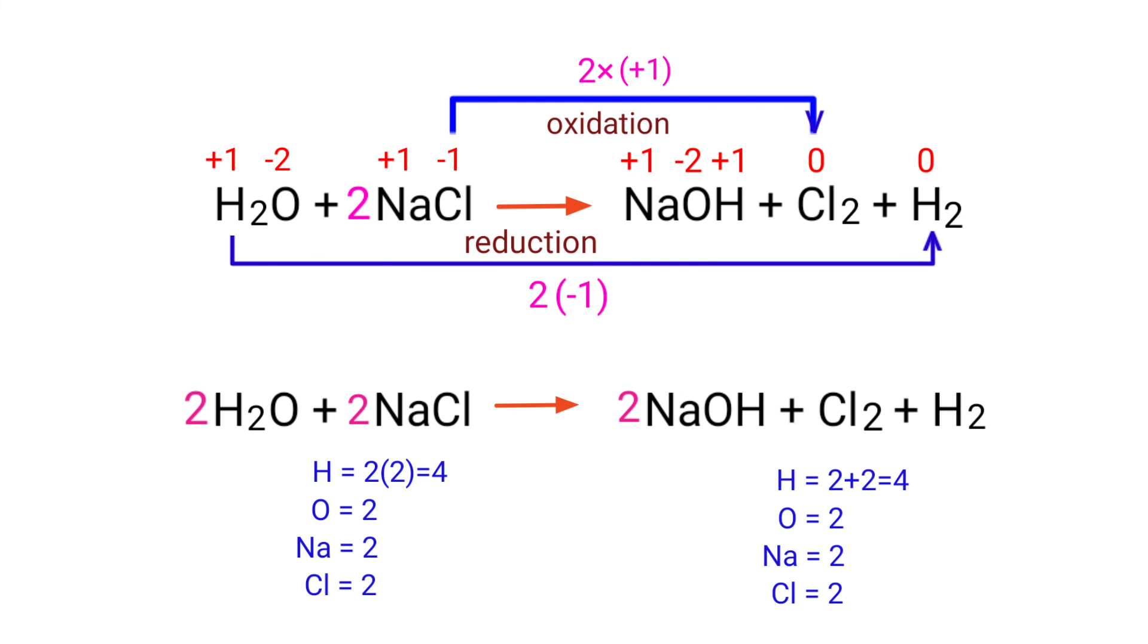The equation is now balanced. There are 4 hydrogen atoms, 2 oxygen atoms, 2 sodium atoms and 2 chlorine atoms on both sides.